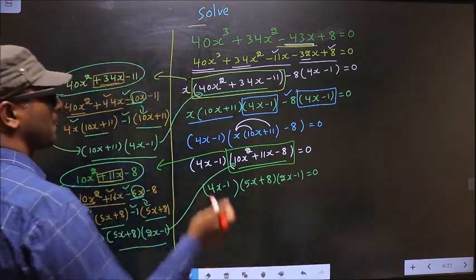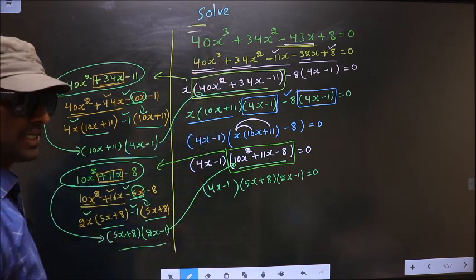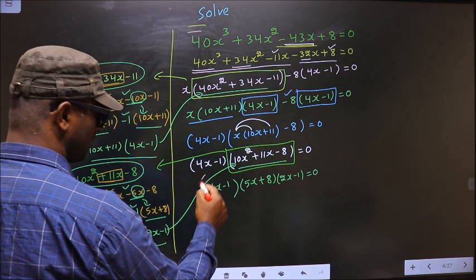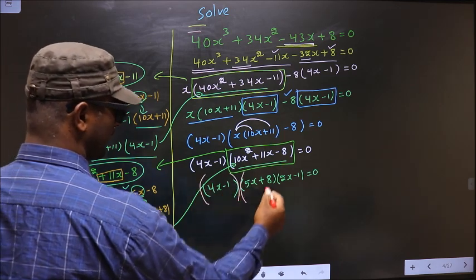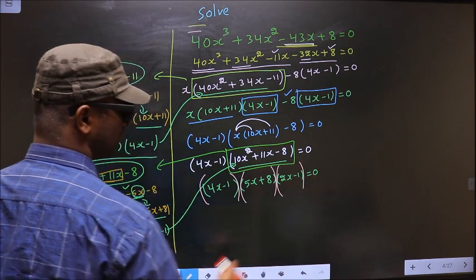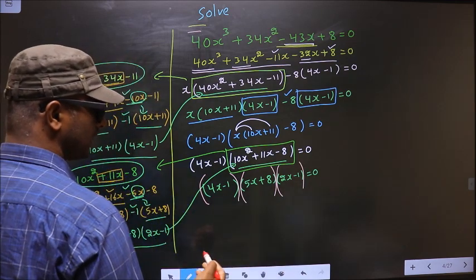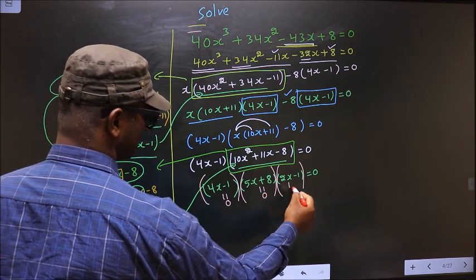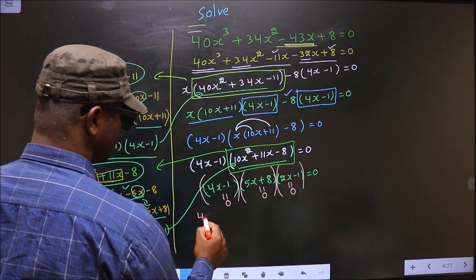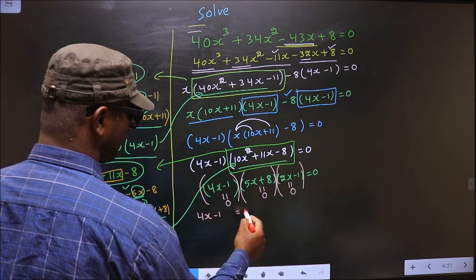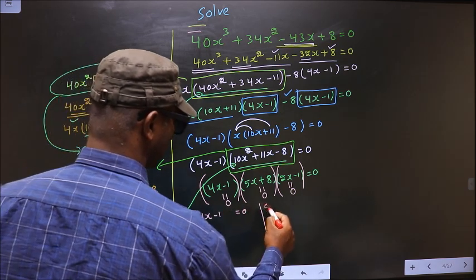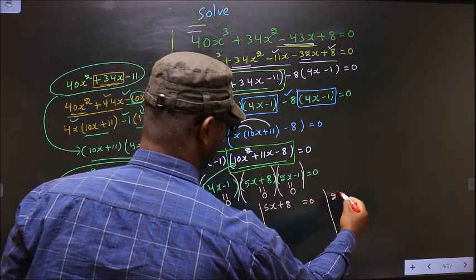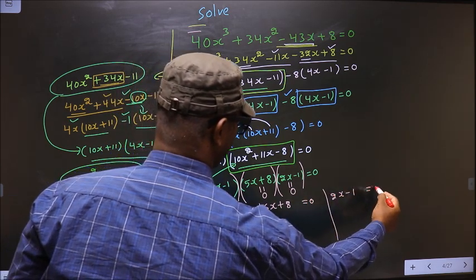They told us to solve, so we should find the values of x. Here we got product of brackets equal to 0, so to get the values of x we should equate each bracket to 0. That is 4x minus 1 equal to 0, 5x plus 8 equal to 0, and 2x minus 1 equal to 0.